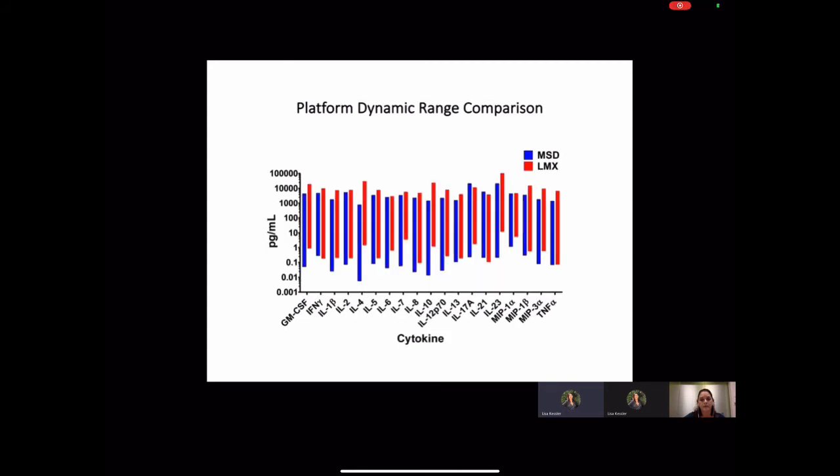We also compared the dynamic ranges for the 19 shared analytes in order to assess the sensitivity differences between the platforms. We extended the standard curves and added extra blanks to evaluate the limits of quantitation. We found the MSD platform, here shown in the blue bars, had a greater lower limit of quantitation for 17 of the 19 analytes, whereas the Luminex platform, shown in the red bars, had a higher upper limit of quantitation for 17 of the 19 analytes.